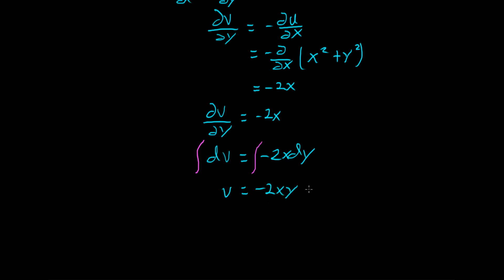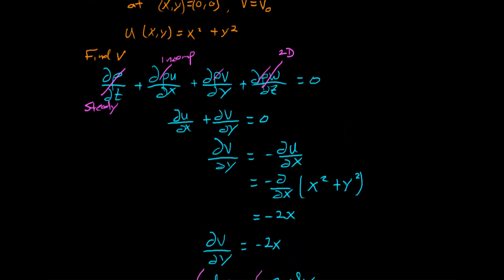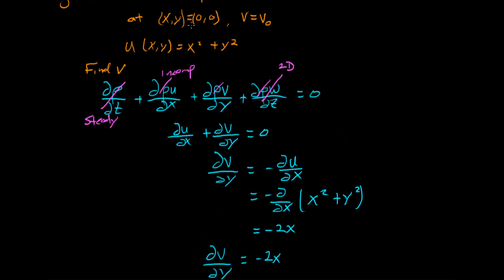But because we don't have limits on there, we need a constant of integration. We were given an initial condition which said that at the origin where x and y are zero, v was equal to some initial velocity v zero.